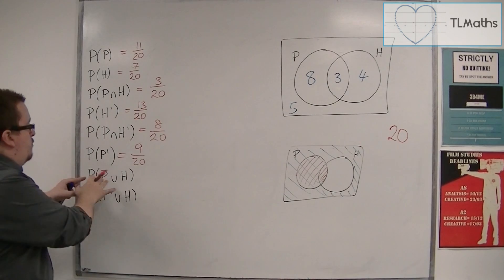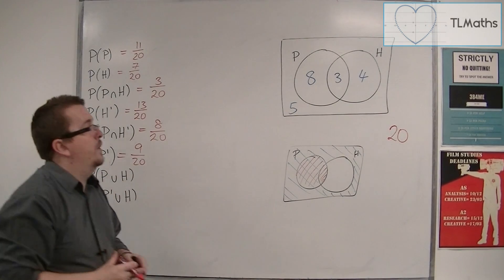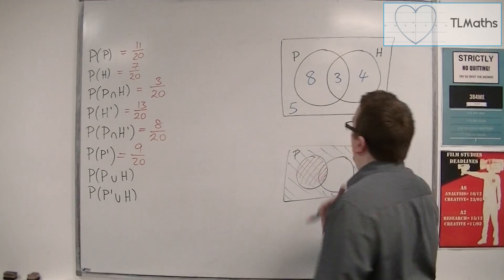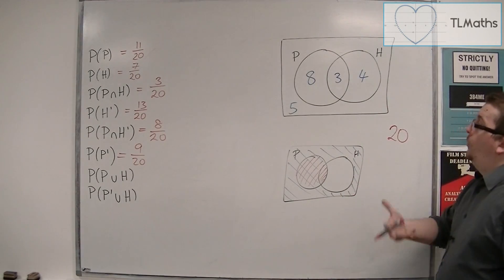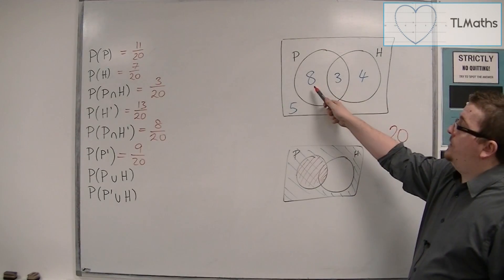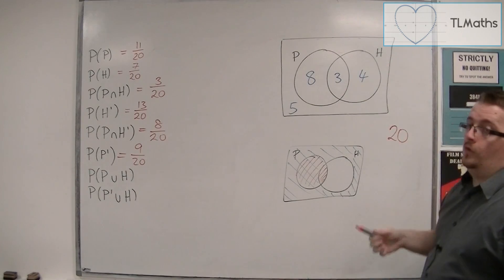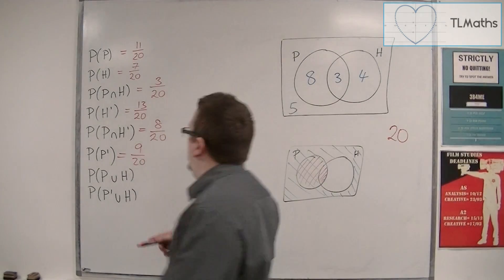The probability of physics union history. So physics or history or both. And so that is 8 plus 3 plus 4. And so 15 out of 20.